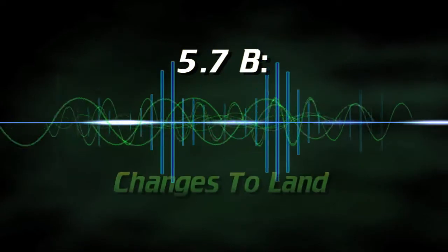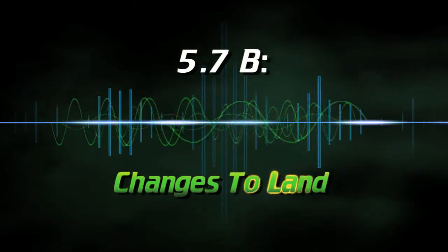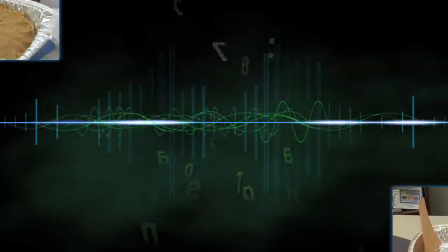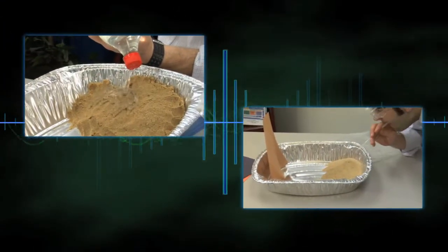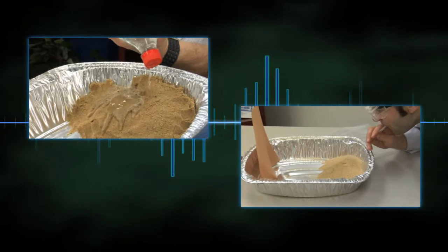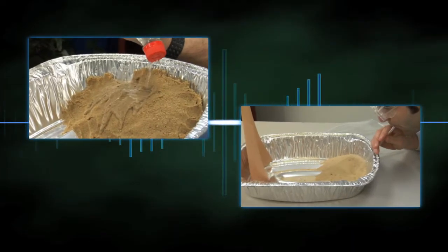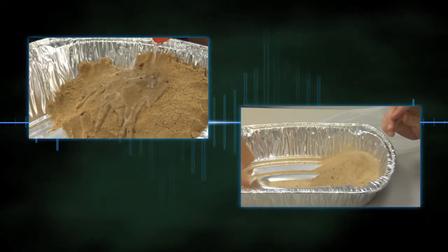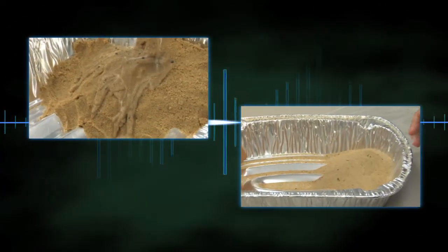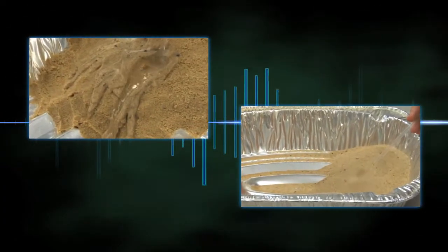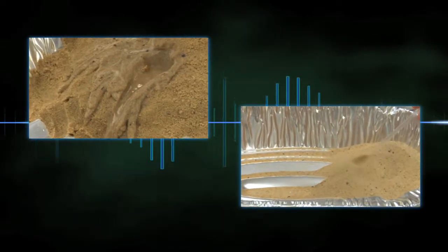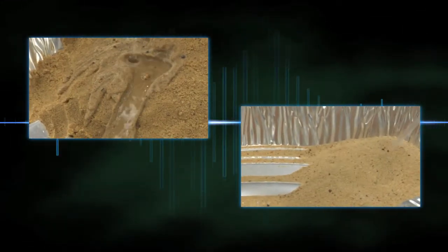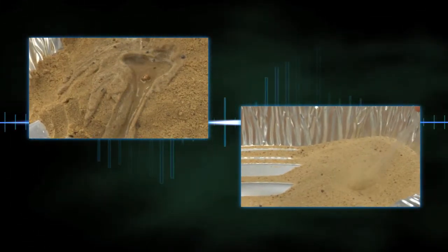5.7b, Changes to Land. In this activity, students use a dripping water bottle and a straw to create landforms on wet and dry sand, thereby simulating the erosion process of water and wind.